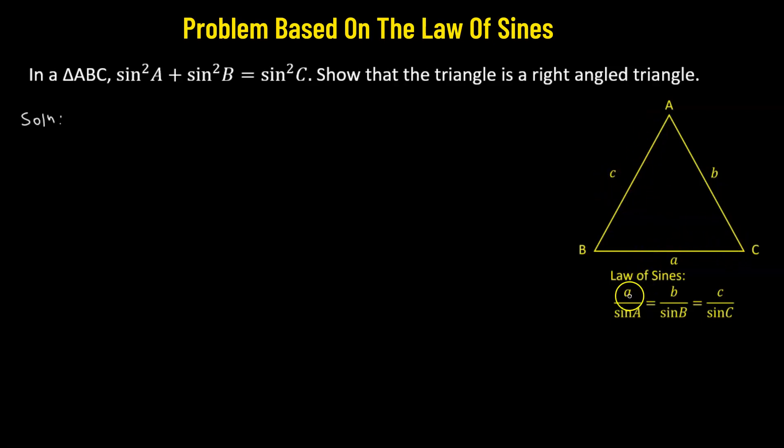Then the law of sines states that the ratio of side a to the sine of the angle opposite to side a, so that will be angle A, equals the ratio of side b to sine of the angle opposite to side b. And this is also equals to the ratio of the third side, that is c, to the sine of the angle opposite to side c, angle C. This is the law of sines.